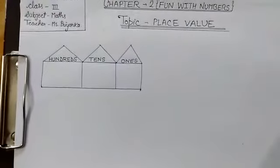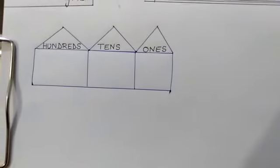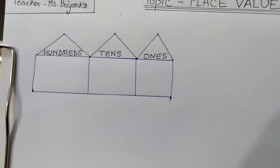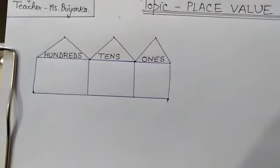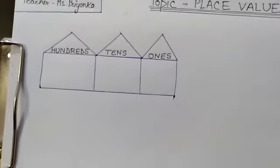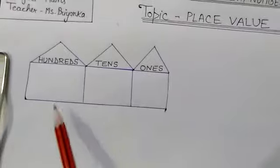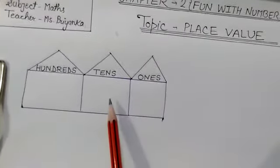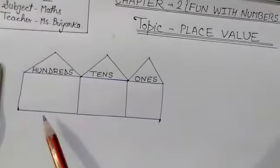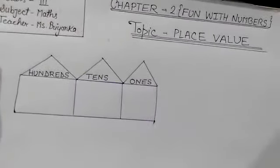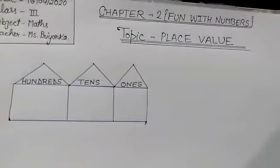Now you are watching something. I have made some place value houses in front of you. Look carefully students, can you tell me what are you watching in this picture? Yes, there are three houses. One's house, ten's house and hundred's house. Just as you live in your house, someone lives in your neighborhood, similarly, three houses I have made here. So we will play a very interesting game, through which you will understand place value.